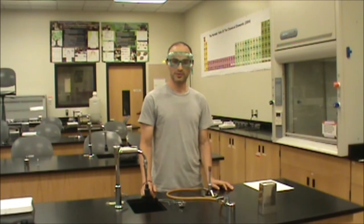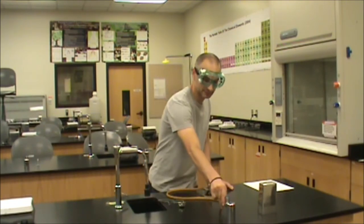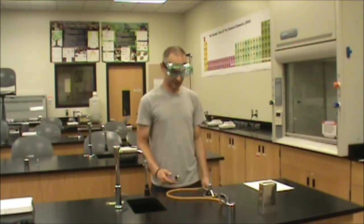When you're ready to ignite the Bunsen burner, you turn on the gas, step back, and use the striker to ignite it.